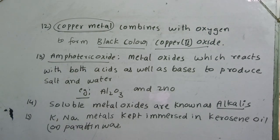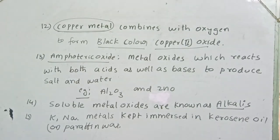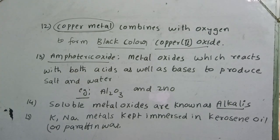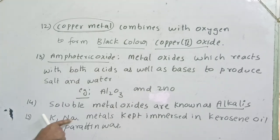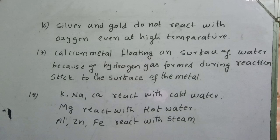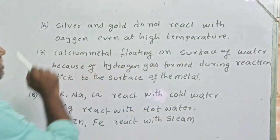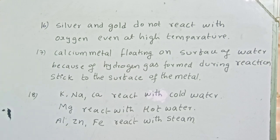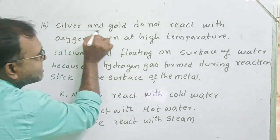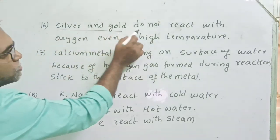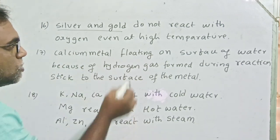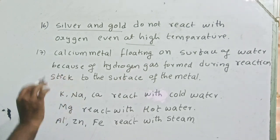Potassium and sodium metals are kept immersed in kerosene oil or paraffin wax because they react vigorously with atmospheric oxygen or atmospheric moisture to form metal oxides and metal hydroxides, and they can even catch fire. So potassium and sodium are very active metals. Silver and gold, on the other hand, do not react with oxygen even at high temperature — so they are called noble metals.